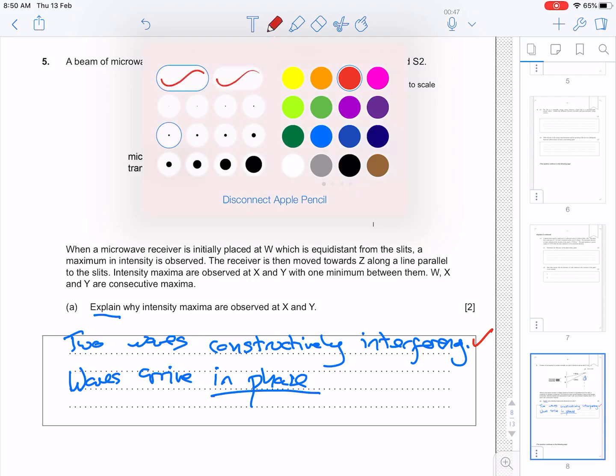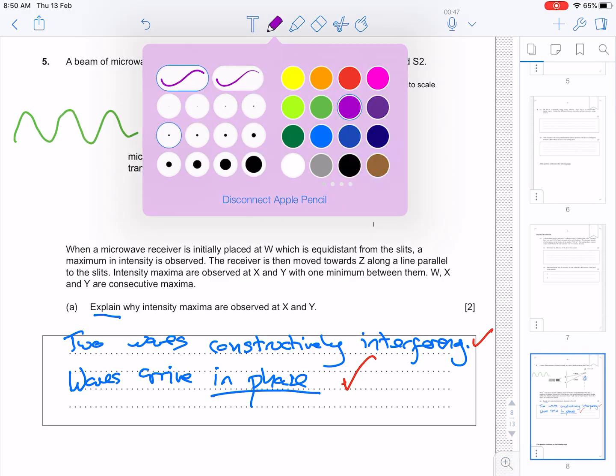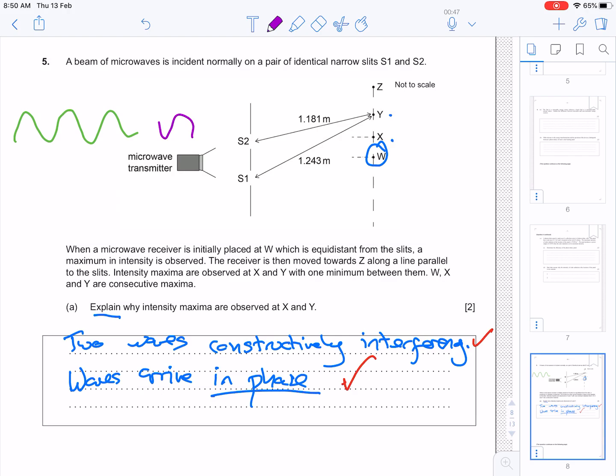The second part to say is that the two waves arrive in phase. Now, we know what that means. That means that if you have one wave in green, and you have another wave in purple, that the peaks line up with the peaks, and the troughs line up with the troughs. It doesn't mean that they have no path difference, but they are in phase.